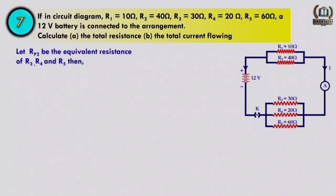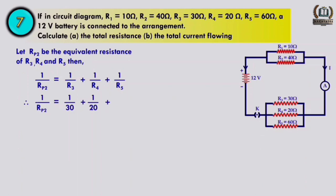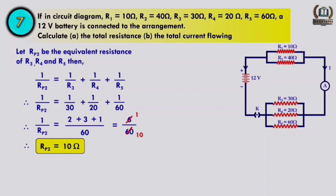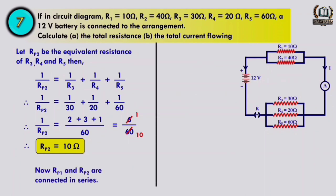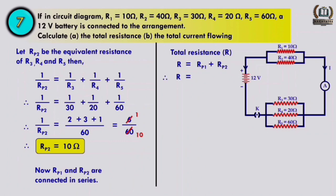Let Rp2 be the equivalent resistance of R3, R4, and R5 in parallel. Writing the formula 1/Rp2 = 1/R3 + 1/R4 + 1/R5, putting in the values and calculating, we get Rp2 = 10 ohm. Since Rp1 and Rp2 are connected in series, total resistance R = Rp1 + Rp2.